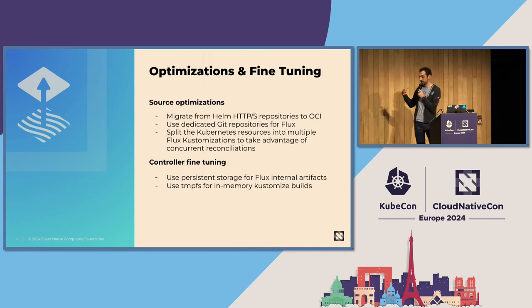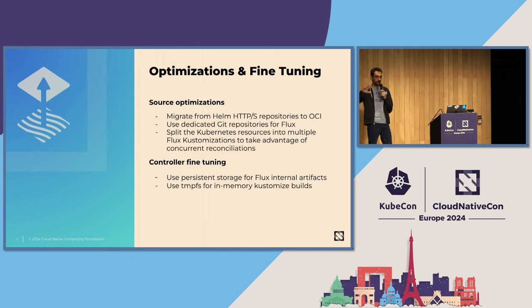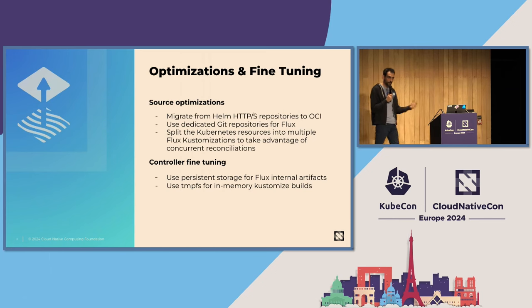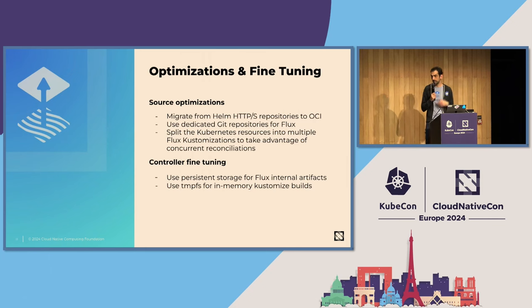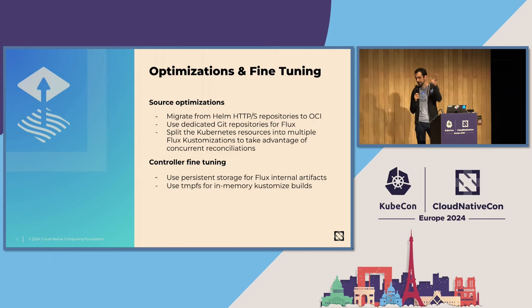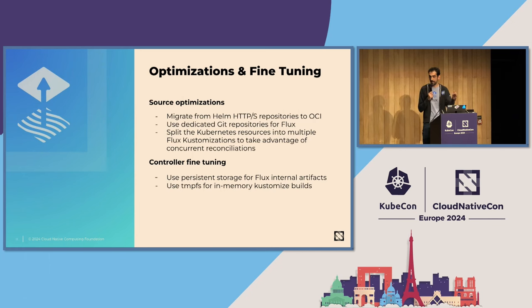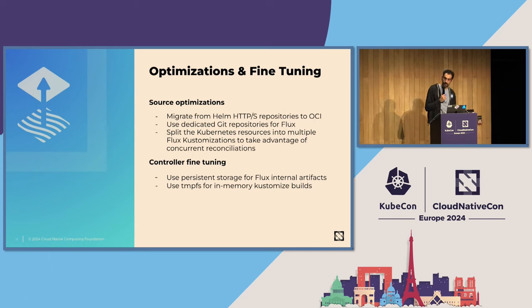Flux has a way of applying things in parallel with a concurrent flag. But if you store everything in a single directory and apply it with a single Kustomization, you don't have much room to improve. You can take advantage of parallelization by splitting your things logically — cluster add-ons in one directory, apps grouped by dev teams — and have multiple Flux Kustomizations with dependencies between them. That's how you can speed up reconciliation a lot.